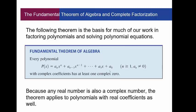With complex coefficients - think about what a complex number is. We're saying now their coefficients are that. Complex coefficients has at least one complex zero. Because any real number is also a complex number, the theorem applies to polynomials with real coefficients as well.